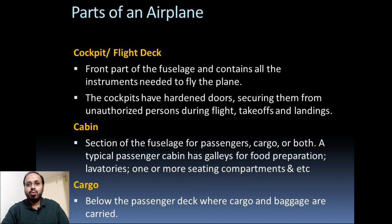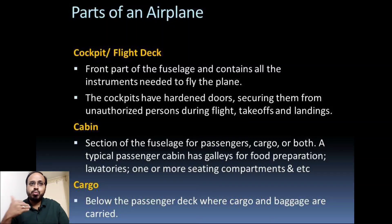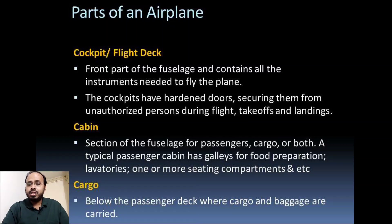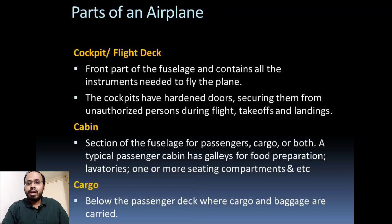Other parts of the aircraft include the cockpit, cabin, and cargo. The cockpit is the front part of the fuselage and contains all the instruments needed to fly the airplane. It has a hardened door secured against unauthorized persons during flight, takeoff, and landing. The cabin is the section of the fuselage where passengers and cargo are seated. It has a galley for food preparation and other compartments. The cargo hold is the below section of the fuselage for storing luggage and transport materials.